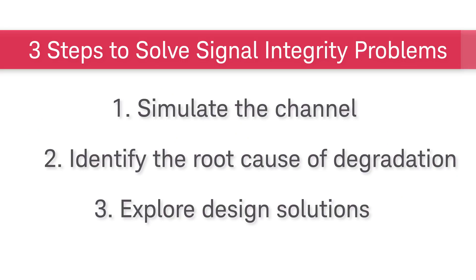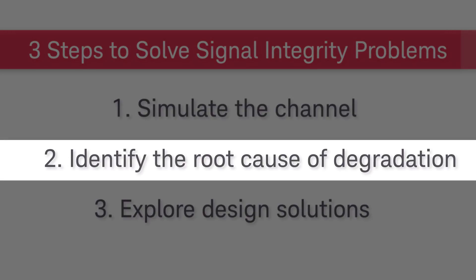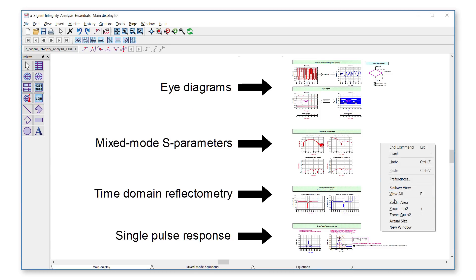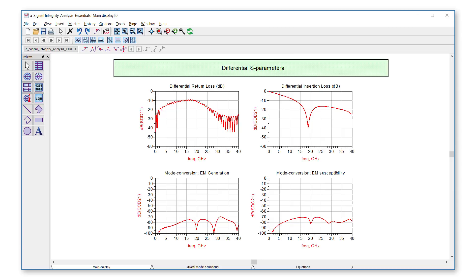Knowing that we have a signal integrity problem, we will take the second step and identify the root cause of degradation. From the Mixed Mode S parameters, we notice that insertion loss has a dip at close to 20 GHz. This dip might be degrading the eye. To better understand this dip, let's take a look at the channel again.